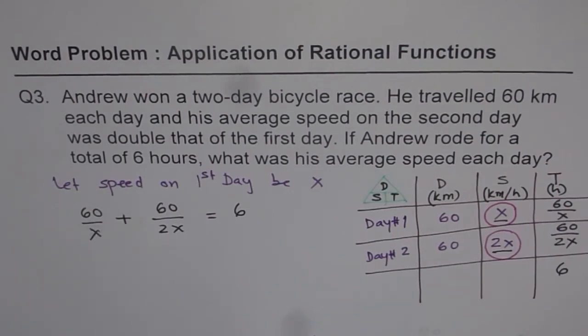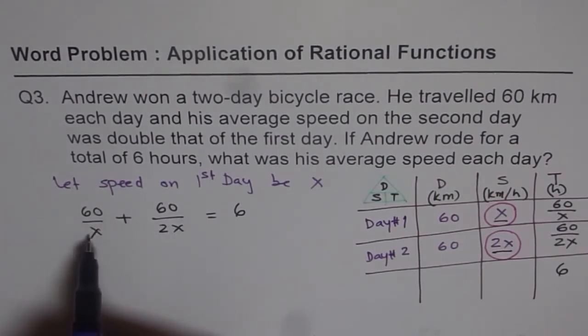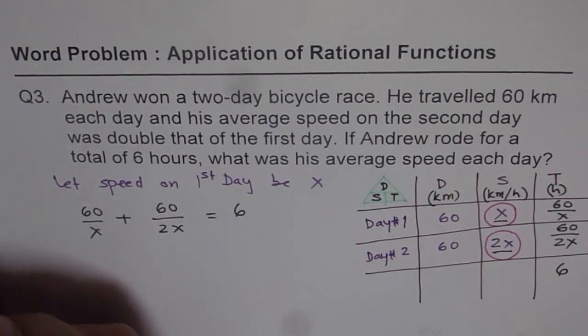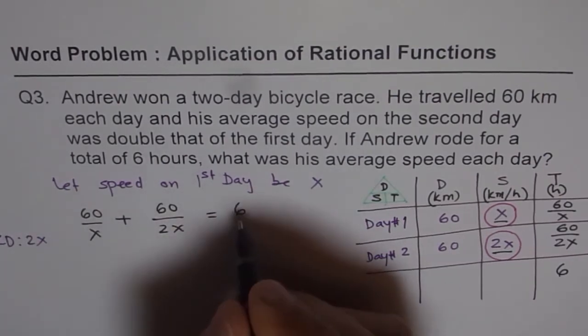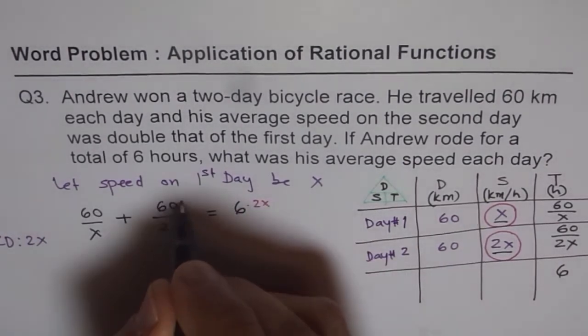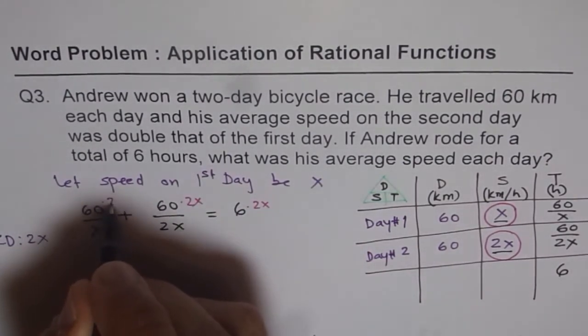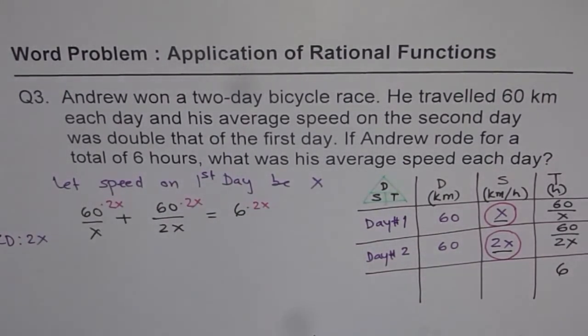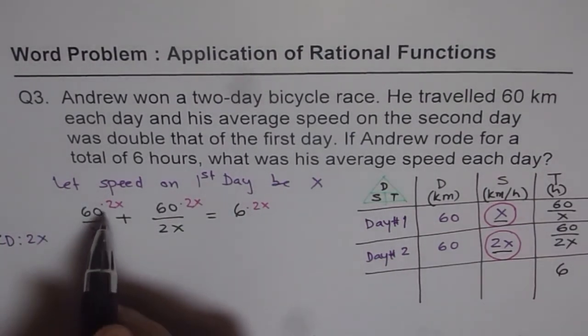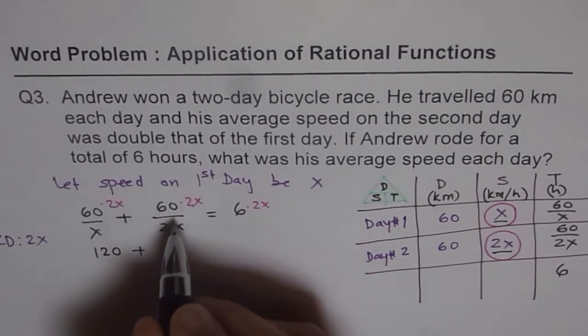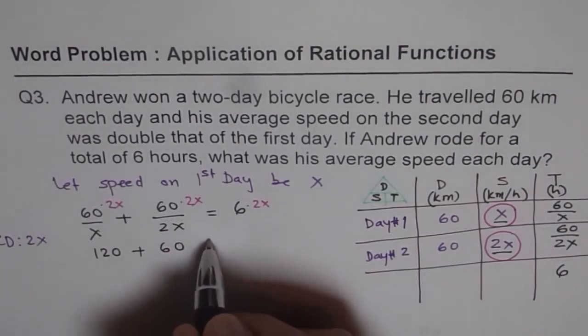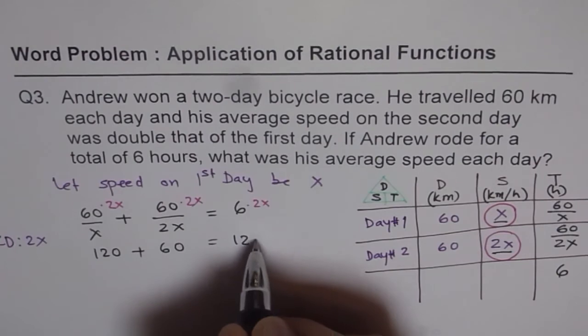You can easily solve by taking common denominator of 2x. So we say lowest common denominator is 2x. We just multiply every term by 2x. So that means times 2x, times 2x, and times 2x. What do you get? You get 60 times 2 here, that means 120 here. Plus this is 60 as such. And here you get 12x.